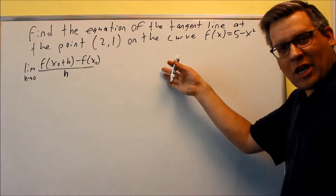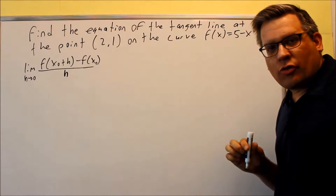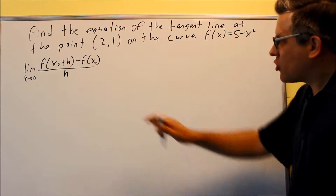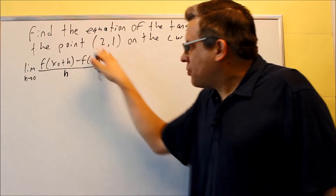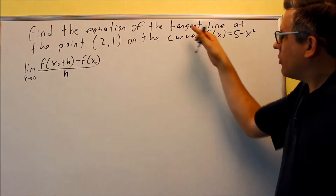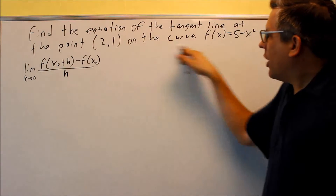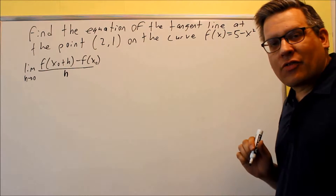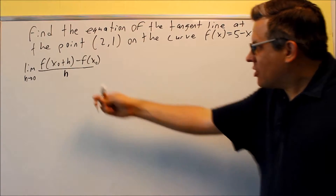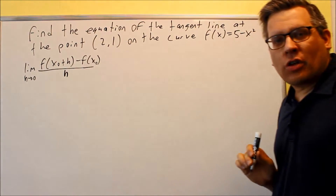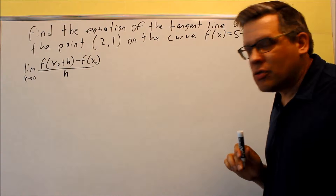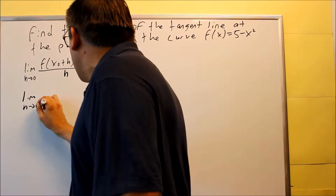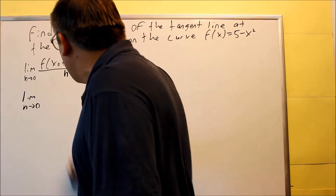Now we're going to do an example of what we talked about before. If you haven't watched the previous video, please watch that one first because it explains where this formula comes from. We're finding the equation of the tangent line at the point (2, 1) on the curve 5 minus x squared. We first need to identify x sub 0, which is always the x value of the given point — in this case, 2.